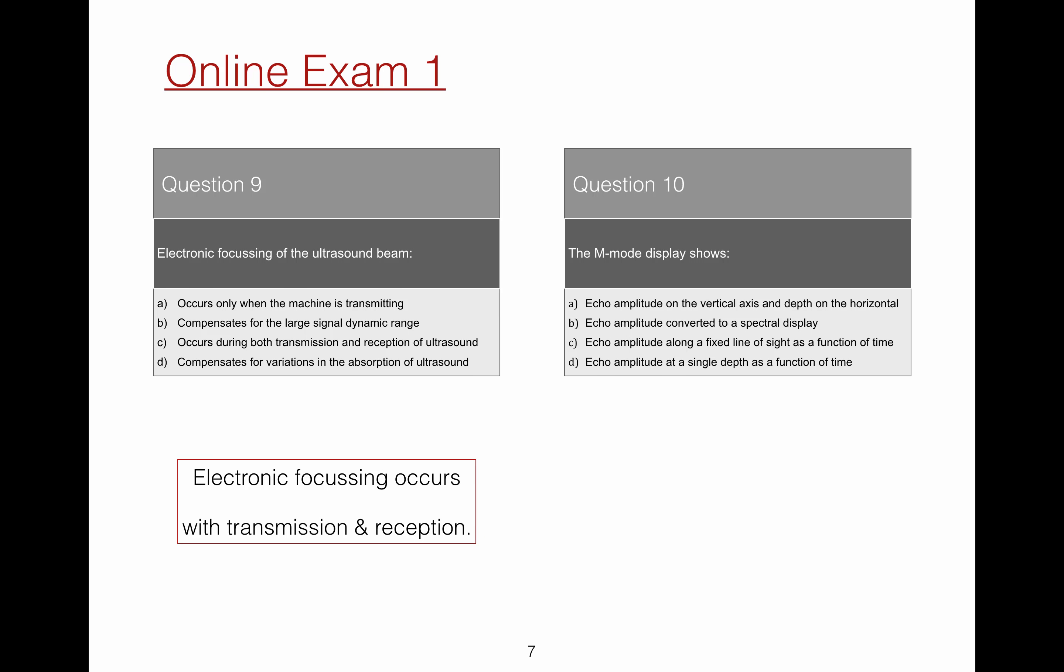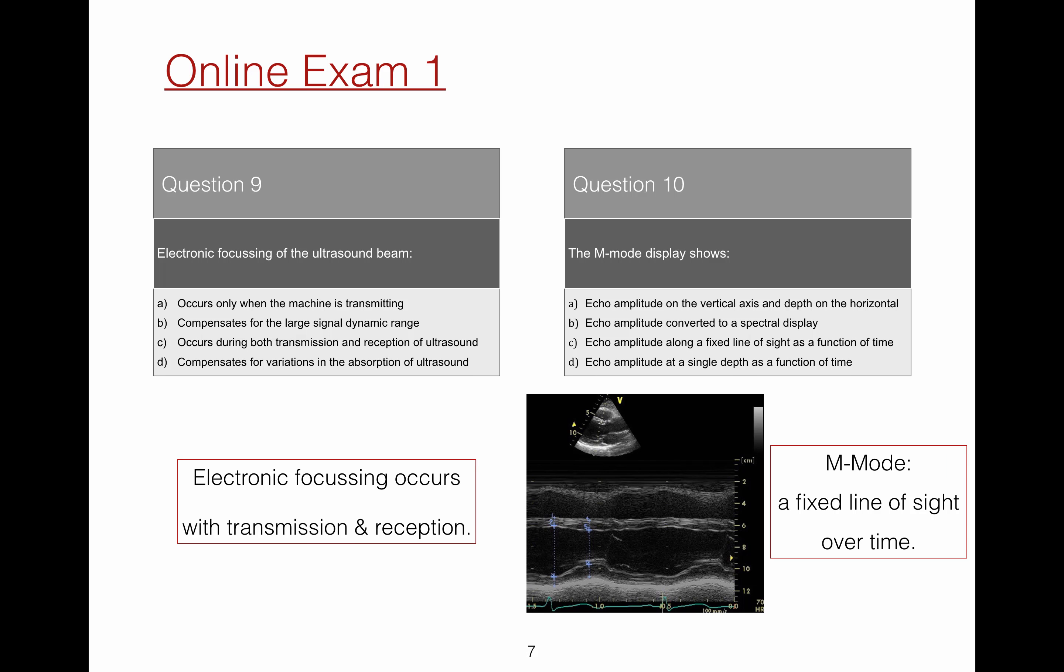Question 10. The M mode displays shows what? M mode display shows the amplitude of echoes received from a fixed line of sight over time.